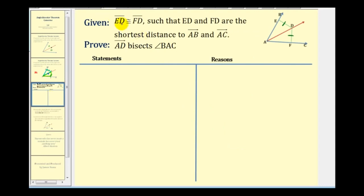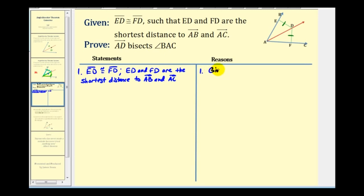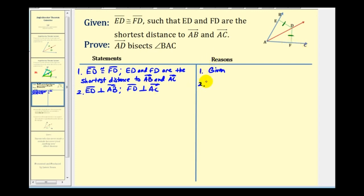Let's write this out. We'll start by stating the given. Because the length of ED and the length of FD are the shortest distance to these two blue rays, segment ED must be perpendicular to ray AB and segment FD must be perpendicular to ray AC. The reason is that the shortest distance from a point to a line is always perpendicular.